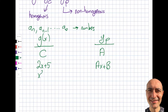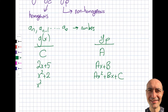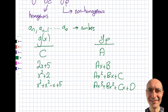Going one level up, if G of X is x² + 2, be careful — you don't write just A·x² + B. You write A·x² + B·x + C. Start from the highest order and include all lower-order terms as well. For something like a third-order polynomial, you'd try A·x³ + B·x² + C·x + D.